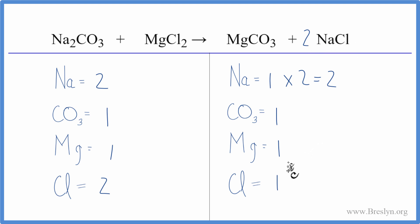we have one times two for the chlorine, that gives us two of those. Carbonates are the same, magnesium is the same, everything's the same. So this equation is balanced.